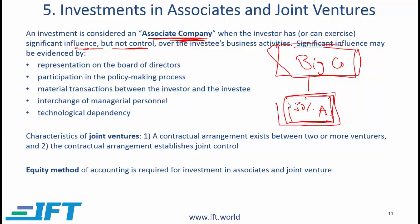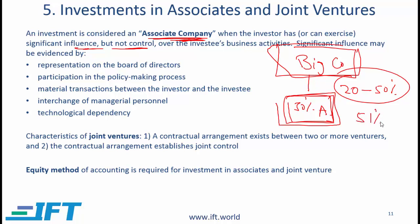Generally, it is presumed that if the investment is somewhere between 20% and 50%, then there is significant influence but not control, because generally for control a 51% or greater stake is required.